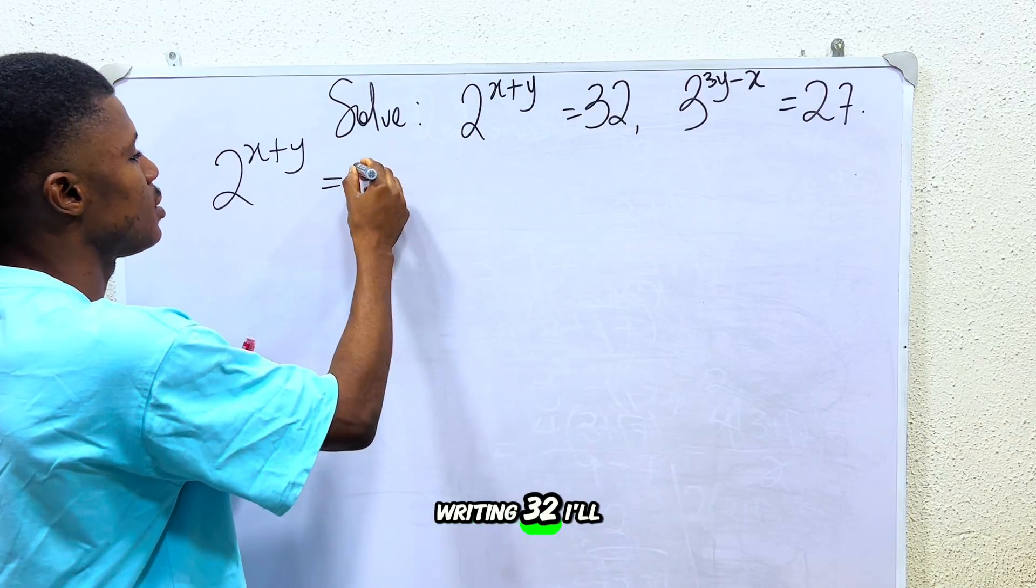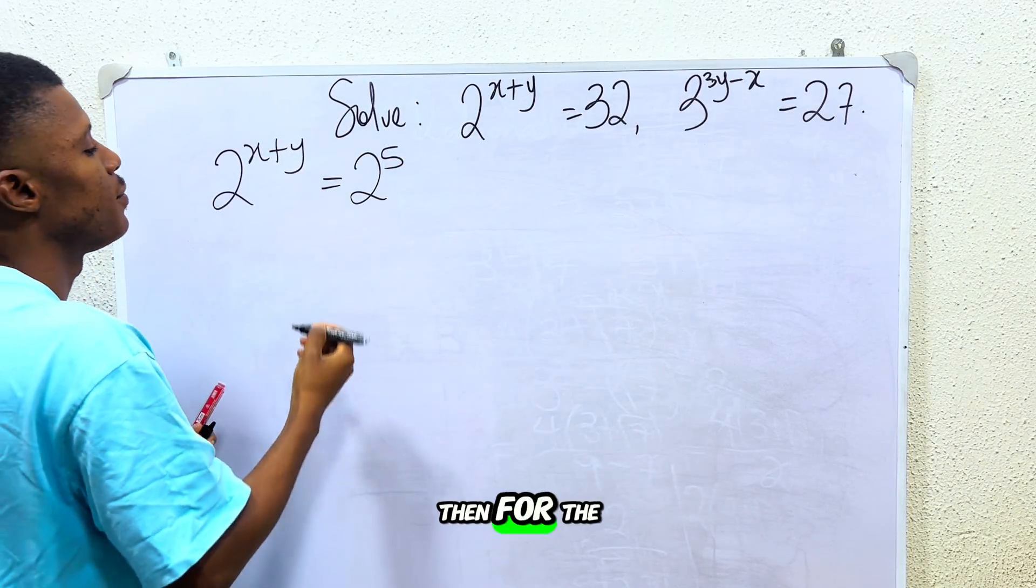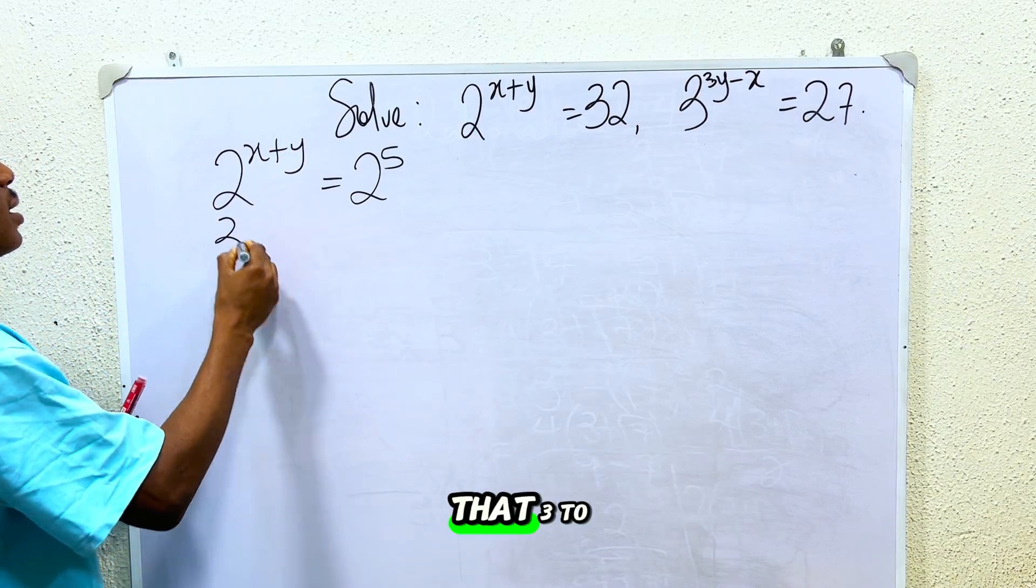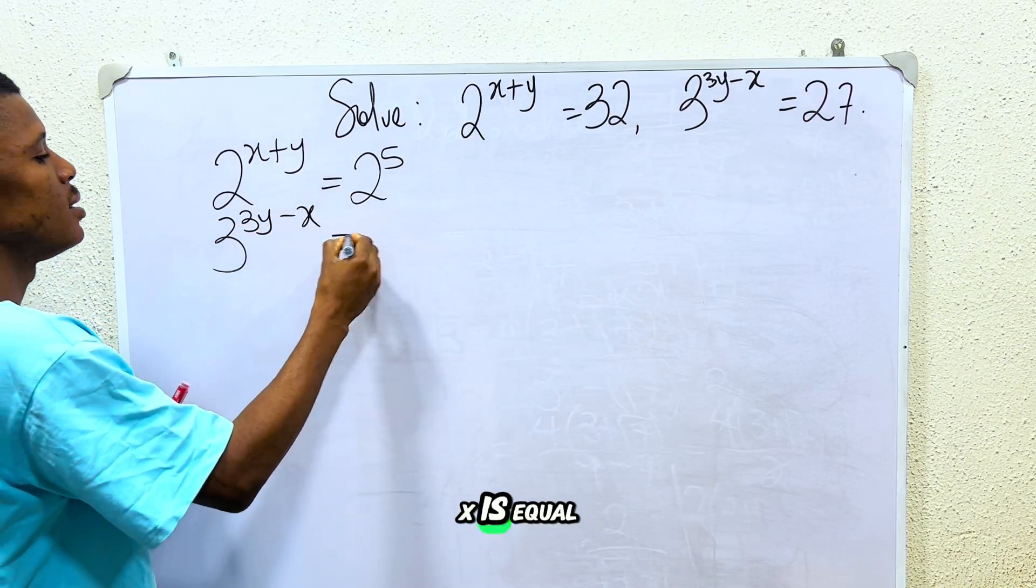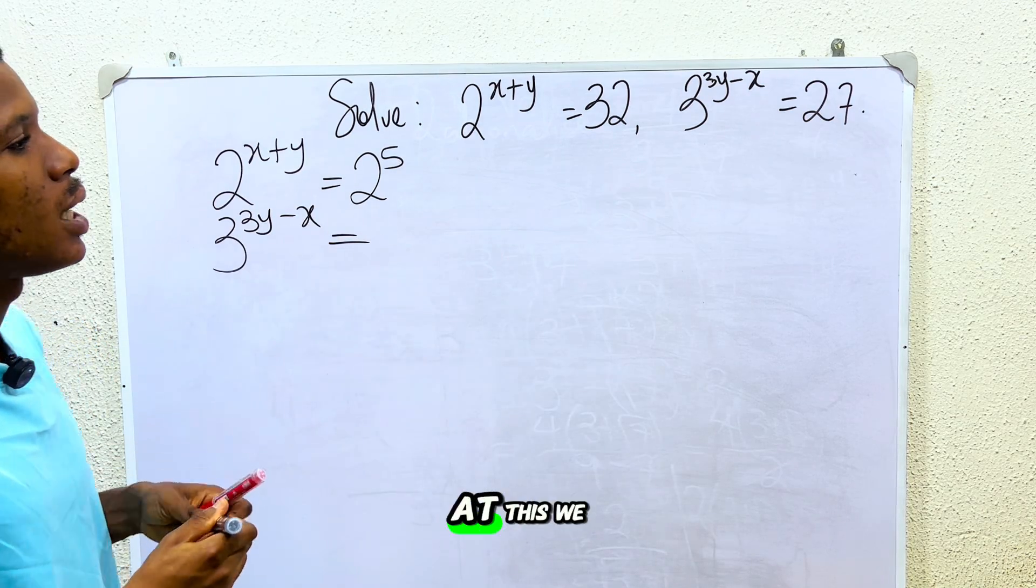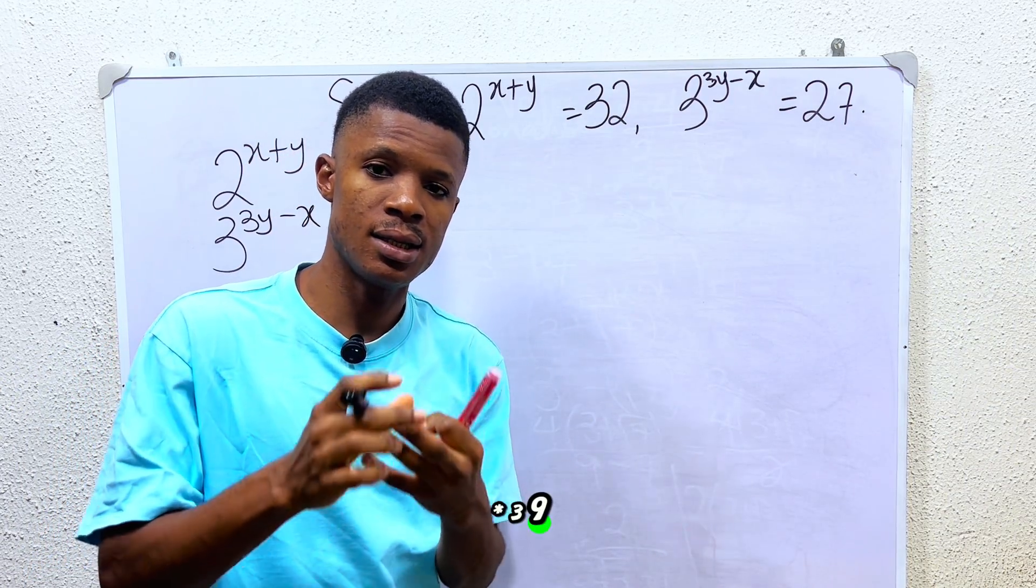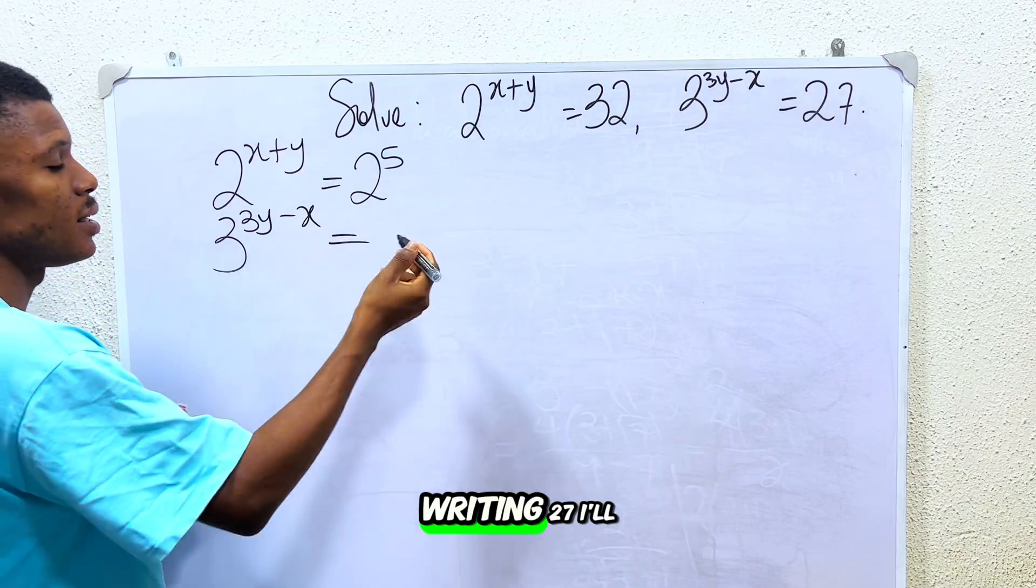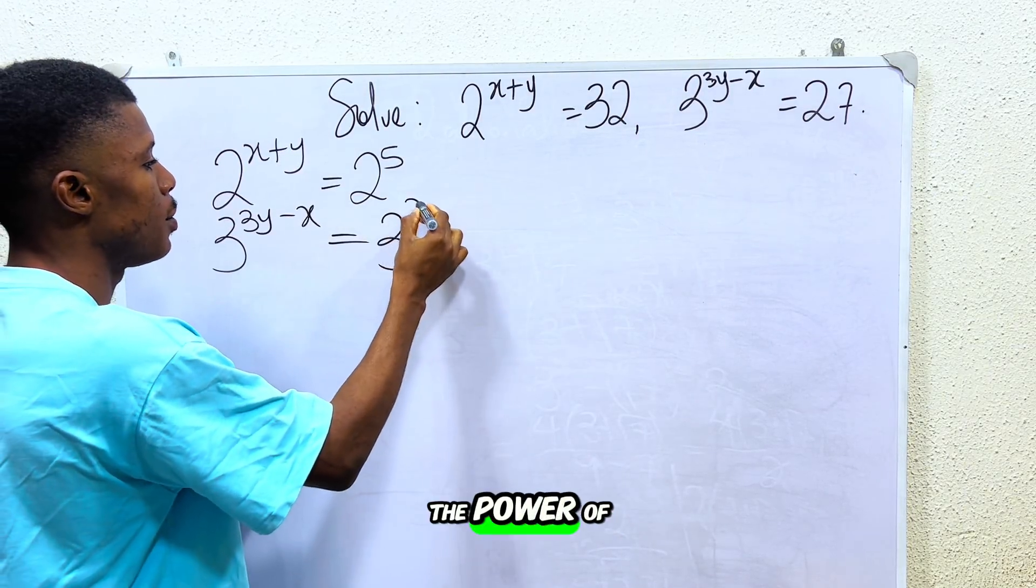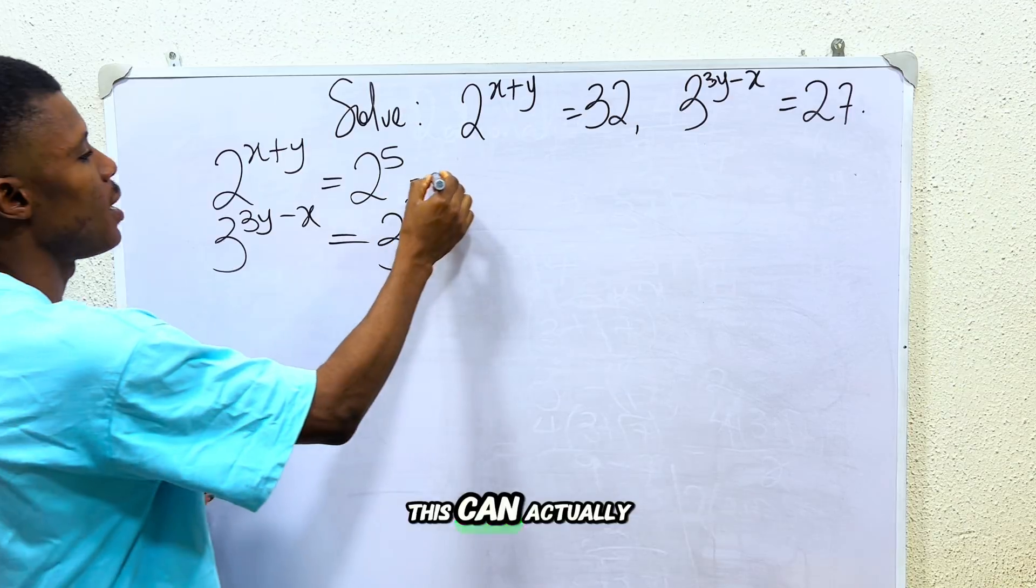So instead of writing 32, I'll write it as 2 to the power 5. Then for the second one we have it that 3 to the power of 3y minus x is equal to... if you look at this we have 27. It can be seen as 3 times 3, 9 times 3, 27. That's 3 to the power 3. So instead of writing 27, I'll write 3 to the power of 3.